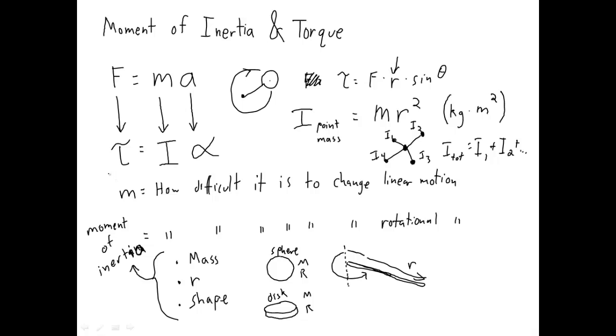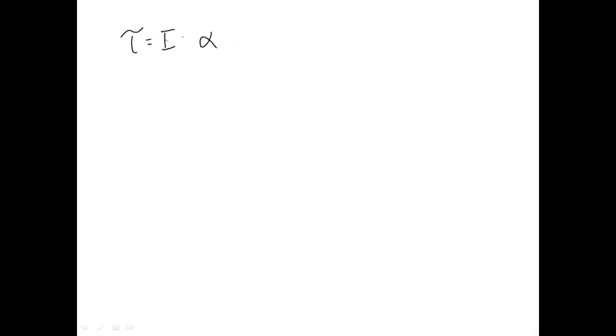This moment of inertia gives us a really cool brand-new formula. Torque equals moment of inertia times angular acceleration — just like force equals mass times acceleration. It's the same type of formula. So we can set those two expressions for torque equal to each other, and this lets us do some really cool stuff.